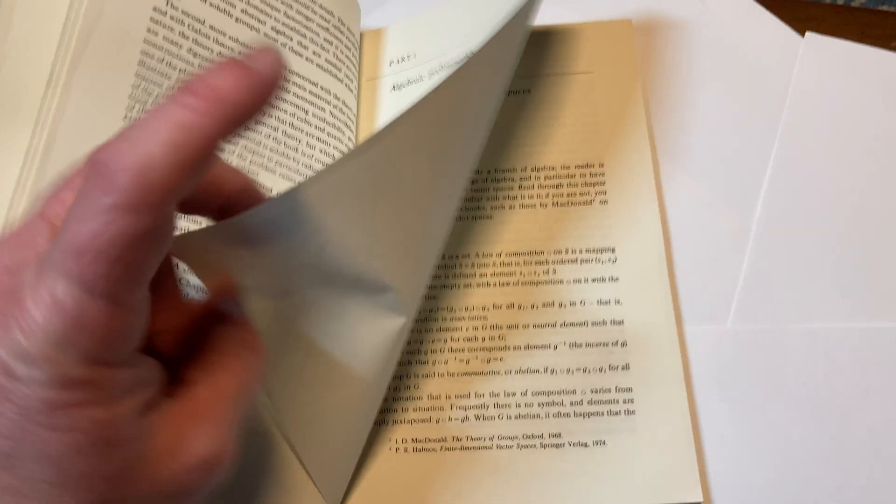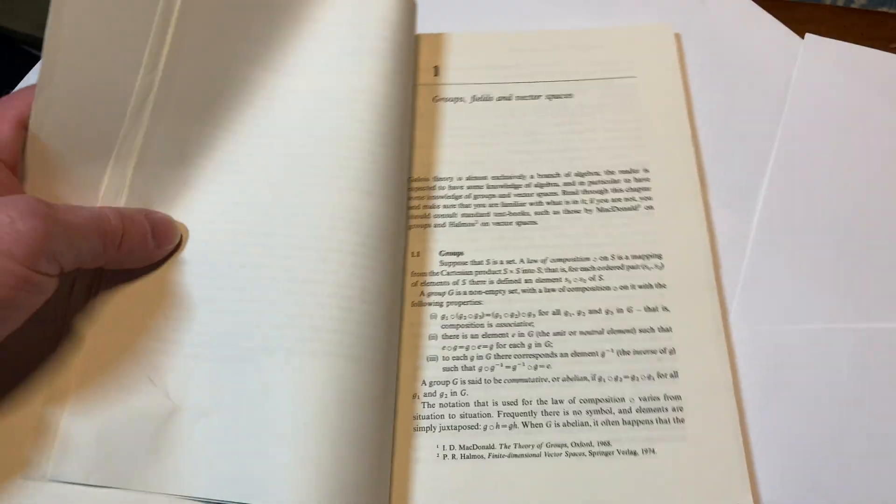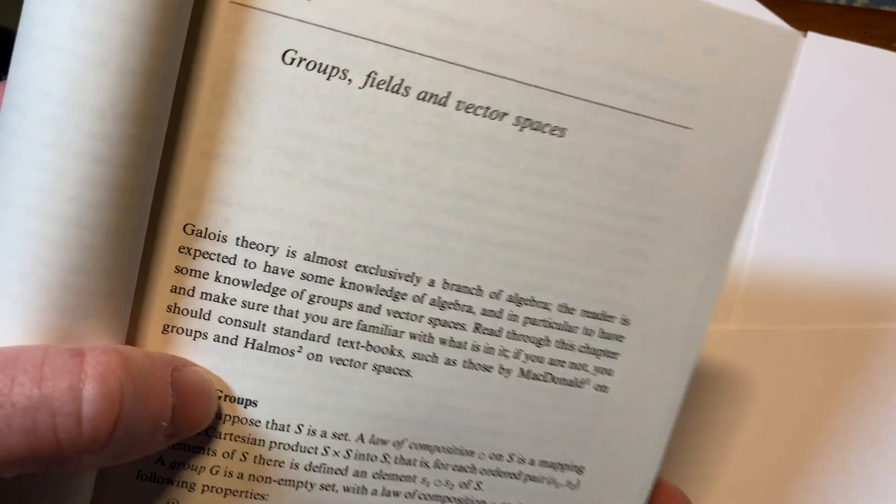Part one is the algebraic preliminaries. Starts with the very basics: groups, fields, and vector spaces.